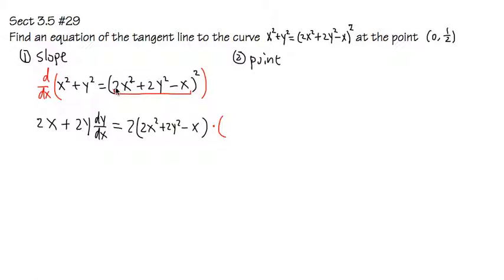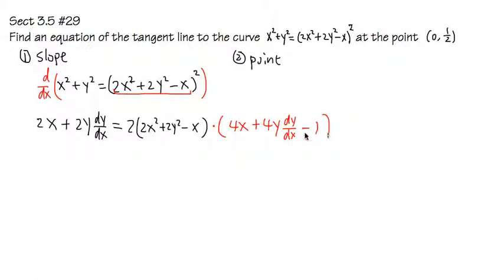Because of the chain rule, we are going to multiply by the derivative of the inside. Derivative of 2x squared is 4x, and derivative of positive 2y squared is plus 4y dy/dx — because y is a function of x, so you have to multiply by dy/dx. And derivative of minus x is going to be minus 1. This equation will give you the derivative.